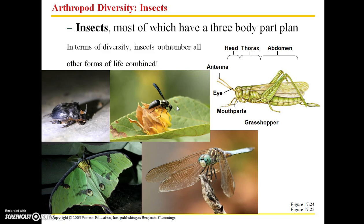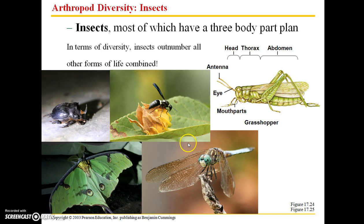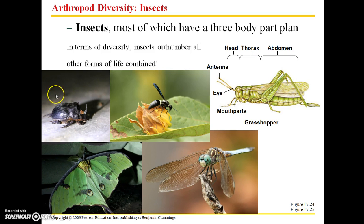A few are photographed here. This wasp and the dragonfly are Kentucky species, and then this moth and this horned beetle are from South Africa.